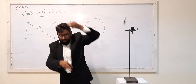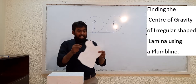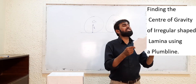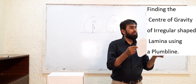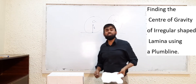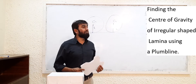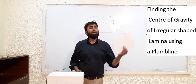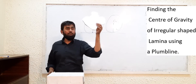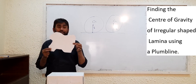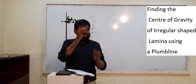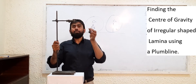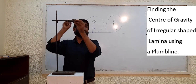I have this irregular shaped object. We don't know where its center of gravity is, because with a regular shaped object you can find the center of gravity very easily. For this irregular shape lamina, I am inserting the cork and nail like this.